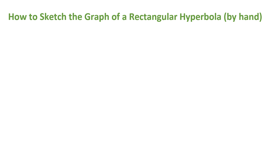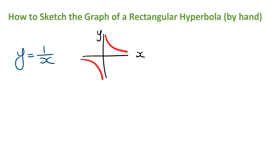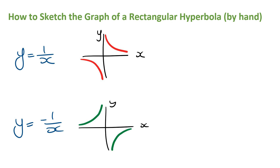Starting off with the basic hyperbola, the rule is going to be y is equal to 1 on x, and its graph is going to look like this. Notice the graph lies on the first and the third quadrant — this is a positive hyperbola. A negative hyperbola is going to have the rule y is equal to minus 1 on x, and its graph lies on the second and the fourth quadrant. For the basic hyperbola, the vertical asymptote is the line x is equal to 0, and the horizontal asymptote is the line y is equal to 0, and we show this by drawing dotted lines.